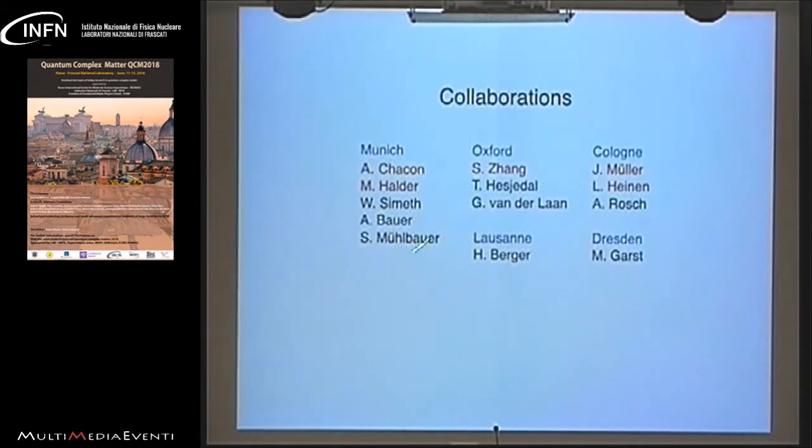Here's my list of collaborators in Munich - Alfonso Chacon and Marco Halder who mostly worked on these two independent phases with neutron scattering with Sebastian Mühlbauer. In Oxford the work on the x-ray scattering was mostly done by Shilei Zhang and Thorsten Hesjedal with strong support from Gerrit van der Laan. The theory is done in collaboration with Achim Rosch's group and Marcus Garst in Dresden and the samples came from Helmut Berger in Lausanne.